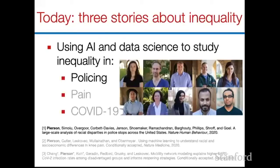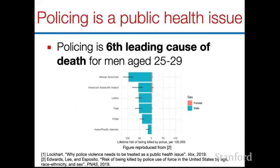Let's jump right in and talk about policing. This is joint work with a number of excellent co-authors: Camelia, Jan, Sam, Dan, Amy, Vignesh, Cheryl, Phoebe, Ravi, and Sharad. It was quite a large project and the efforts of a ton of people. So why is policing something we care about? That point doesn't really need to be explained this year — it's obvious that policing has a tremendous impact on communities across the United States, and in fact it's one of the major leading causes of death for young men, particularly young African-American men.